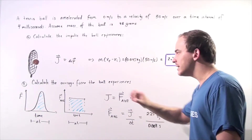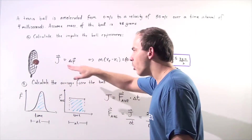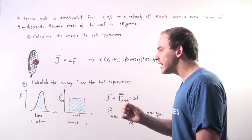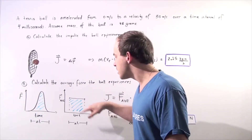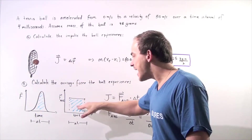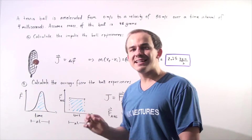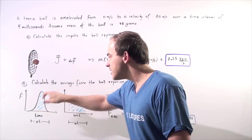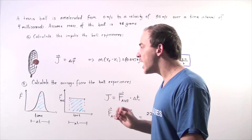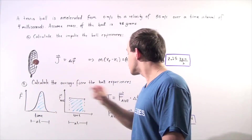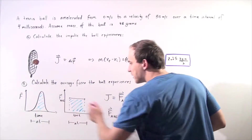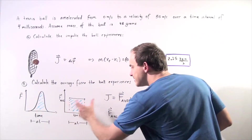We want to find the average force that the ball experiences, such that the area underneath this force representing the average force — shown in blue — will be exactly identical to the area under the actual force curve. Recall that the impulse is the area underneath the force curve, so the impulse equals this area, which equals this area.